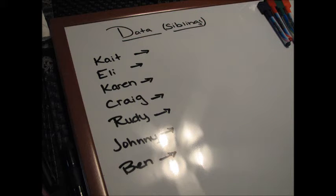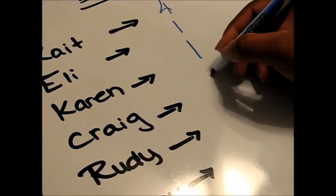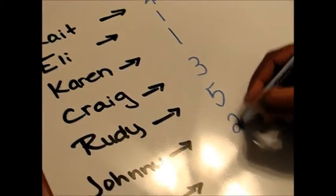So we gotta grab the data first and make a plot. We have 7 folks with siblings, so let's see what we got. Kate's got 4, Eli's got 1, Karen's got 1, Craig's got 3, John's got 2, Ben's got 4.